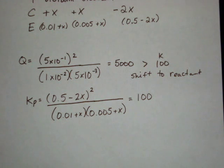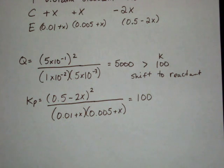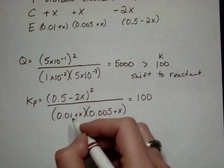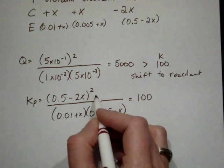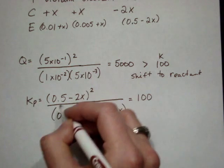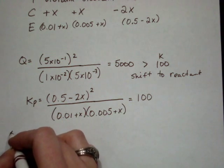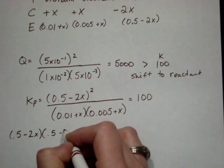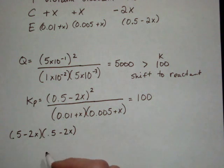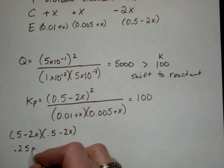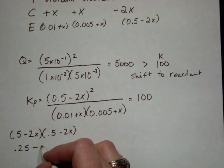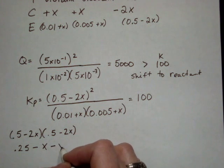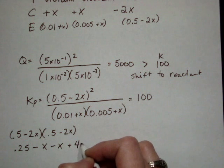If you don't remember the quadratic equation, it would be a great time to look it up now. I'm going to go ahead and try to work through some of this. So, 0.5 minus 2x times the same thing. That's going to become 0.25 minus 1x minus 1x plus 4x squared.